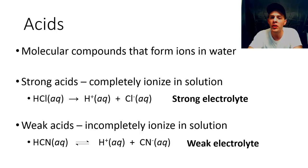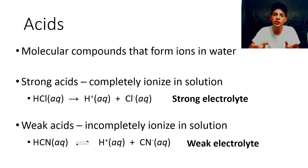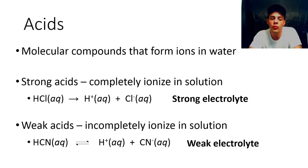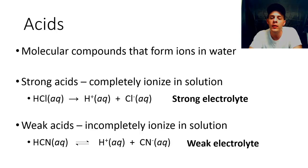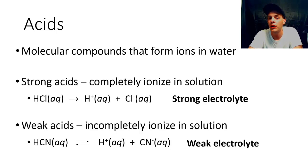So we have strong electrolytes — that's when you have either a strong acid or an ionic compound dissolving to get a complete dissociation of ions into the water. Then you have weak electrolytes, which result from weak acids such as HCN. And then we have non-electrolytes like glucose, which occur when you dissolve a molecular compound in water that is not an acid and therefore does not break up into ions.